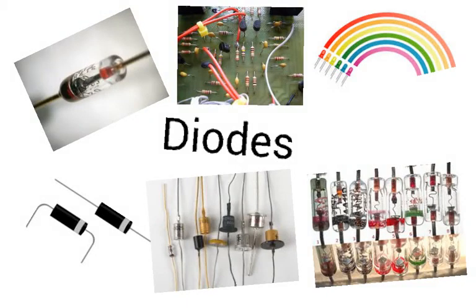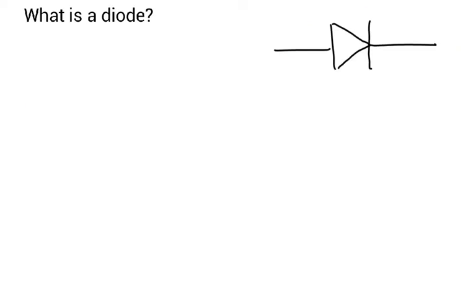Hi guys, today we're going to revise diodes and some of their uses. So starting off, what is a diode? Well, a diode is a piece of equipment or a component in a circuit that will only allow electricity to flow through it in one direction.